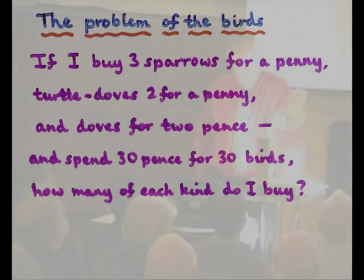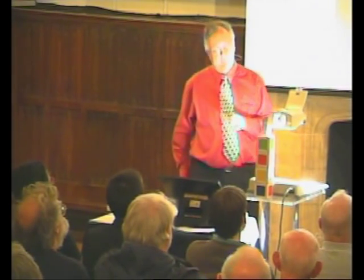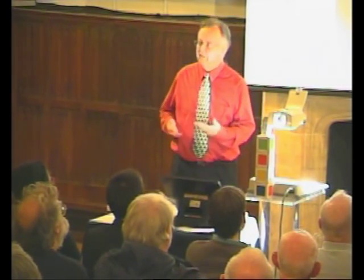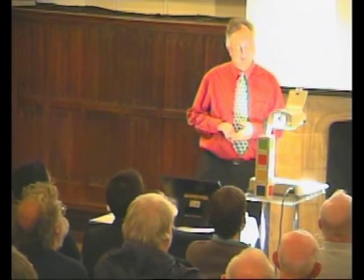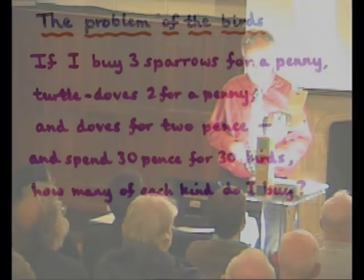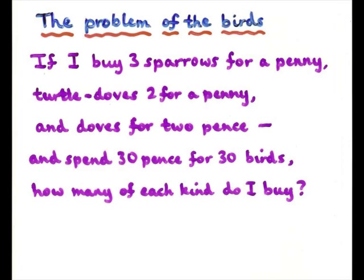The problem is you've got some information here, you have two equations, but it seems you have three unknowns because you want to know how many of each kind of bird. But in fact, there is more information here. It's assumed that you buy at least one of each bird, and the other thing is that your answer is going to be whole numbers — you don't buy fractions of doves. So with that, we do have enough information to solve it.